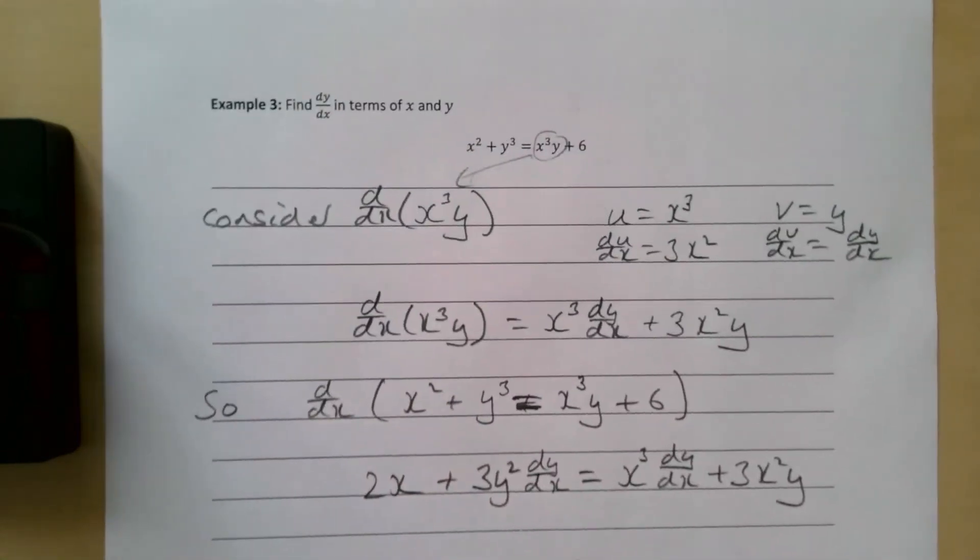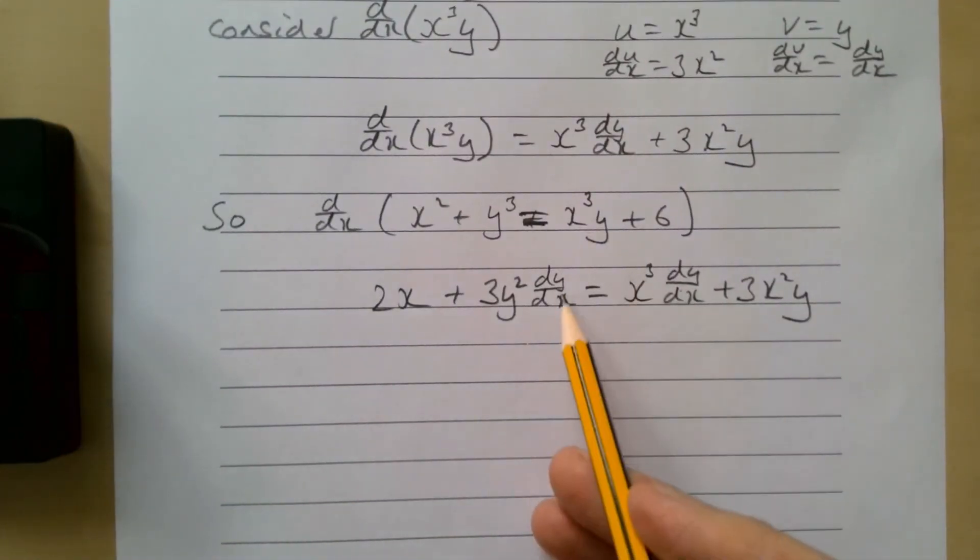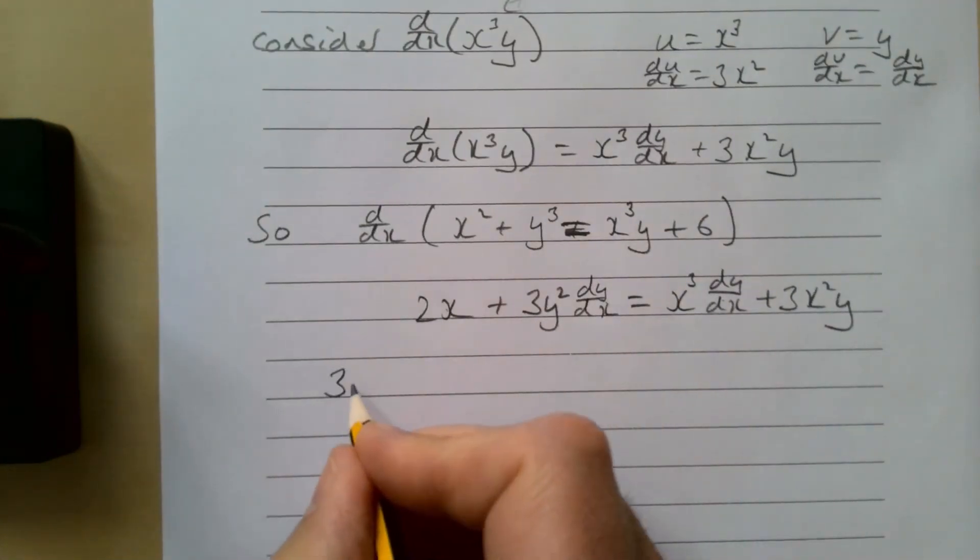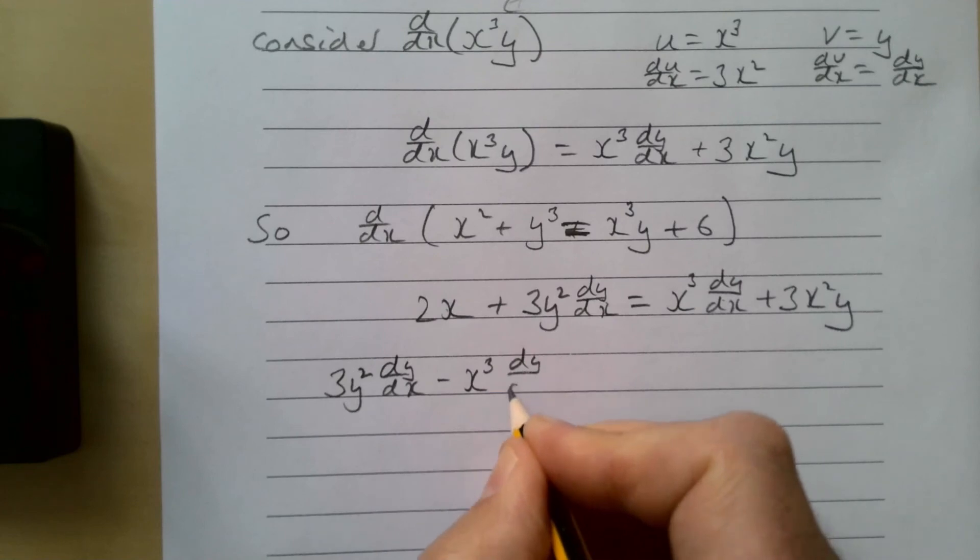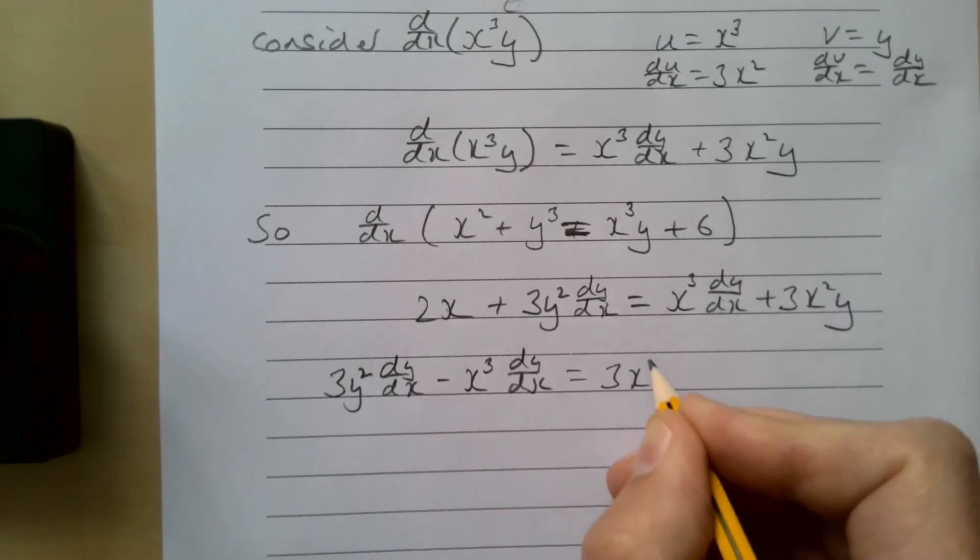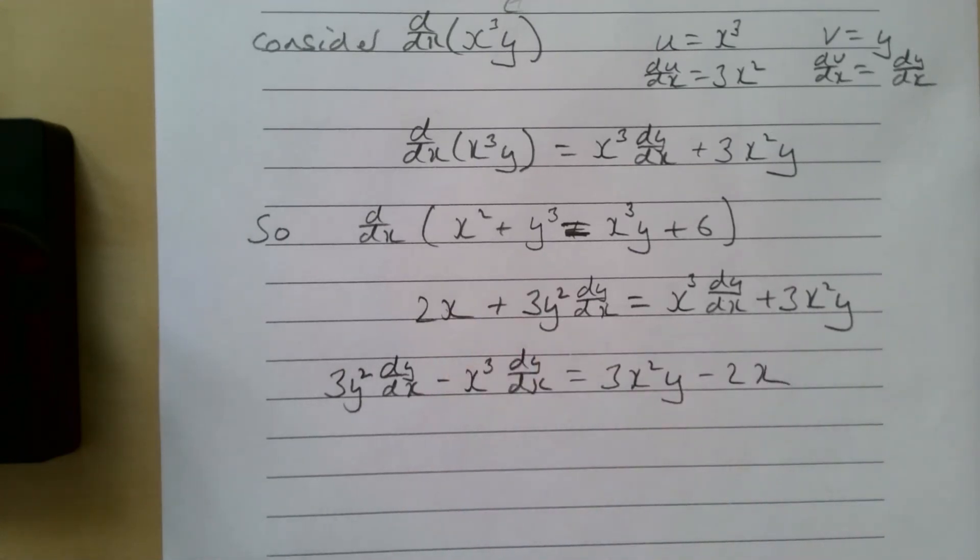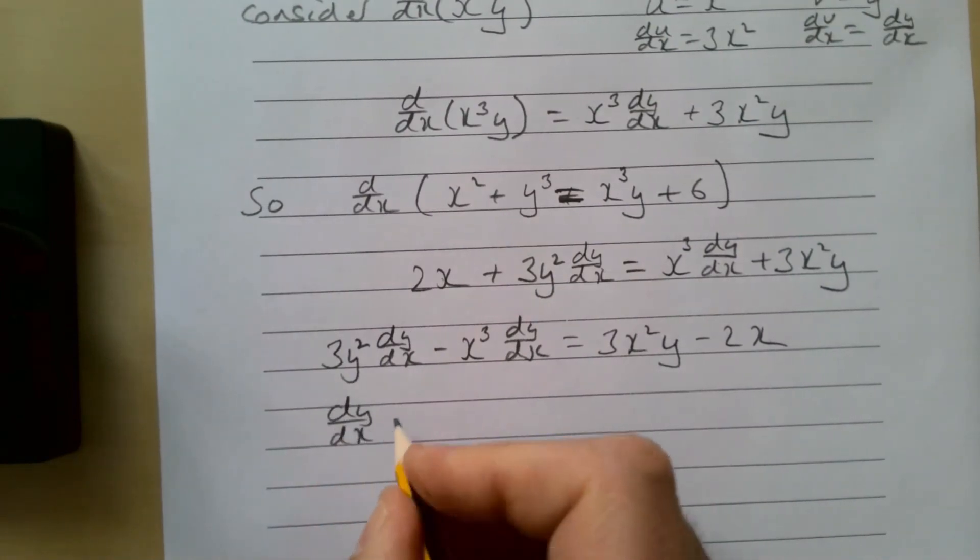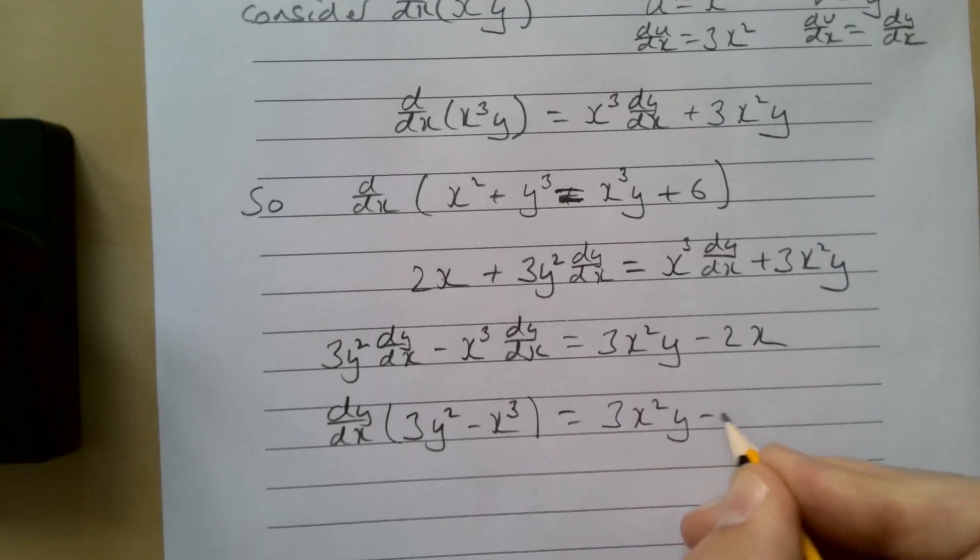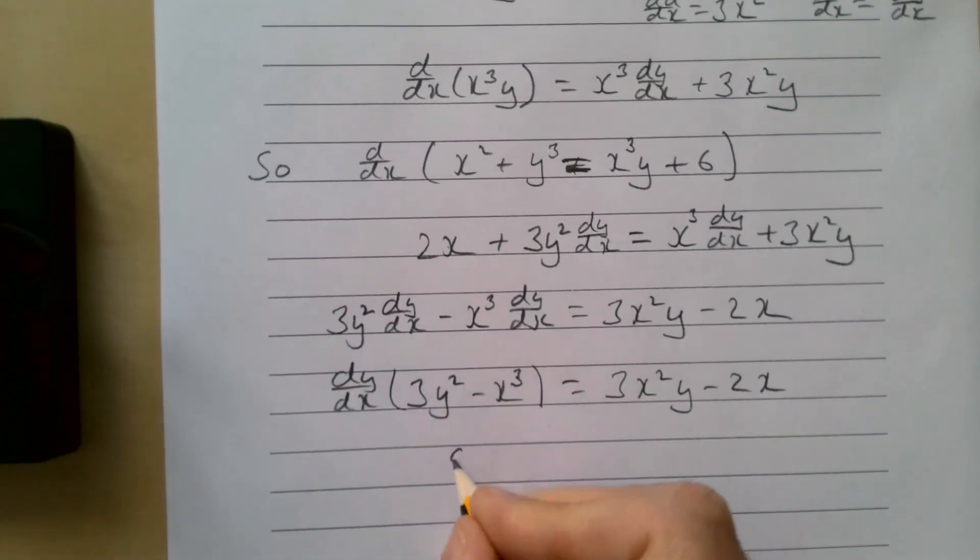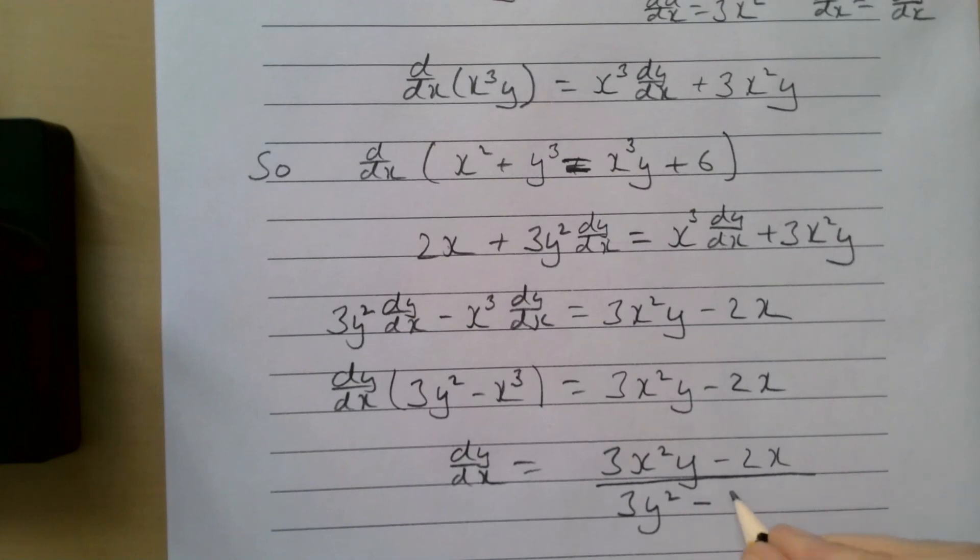We need to get dy/dx on its own. We take this over to this side and this over to that side. That gives 3y² dy/dx - x³ dy/dx = 3x²y - 2x. Factoring out: dy/dx(3y² - x³) = 3x²y - 2x. So dy/dx = (3x²y - 2x)/(3y² - x³).